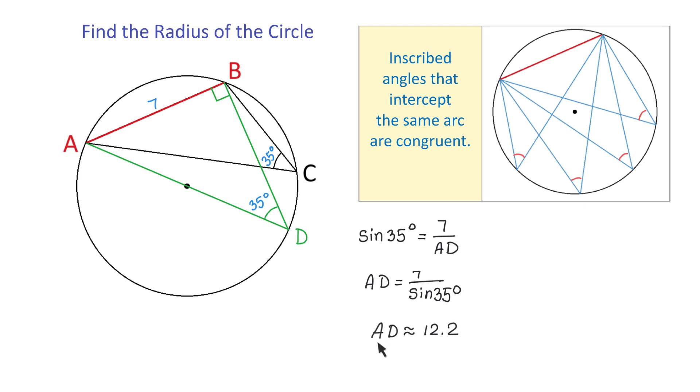And we know that AD also represents the diameter of the circle. So to find the radius, we just need to divide the diameter by 2.